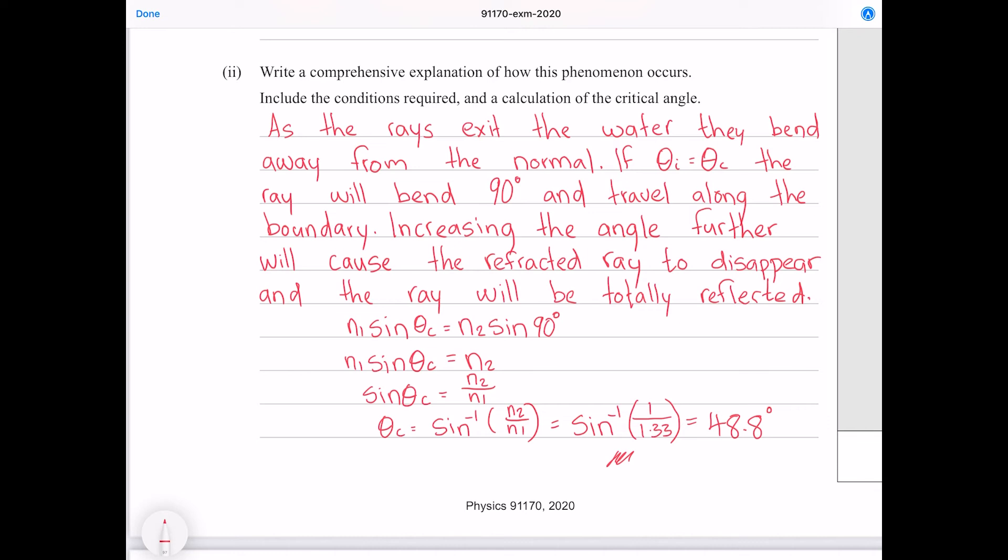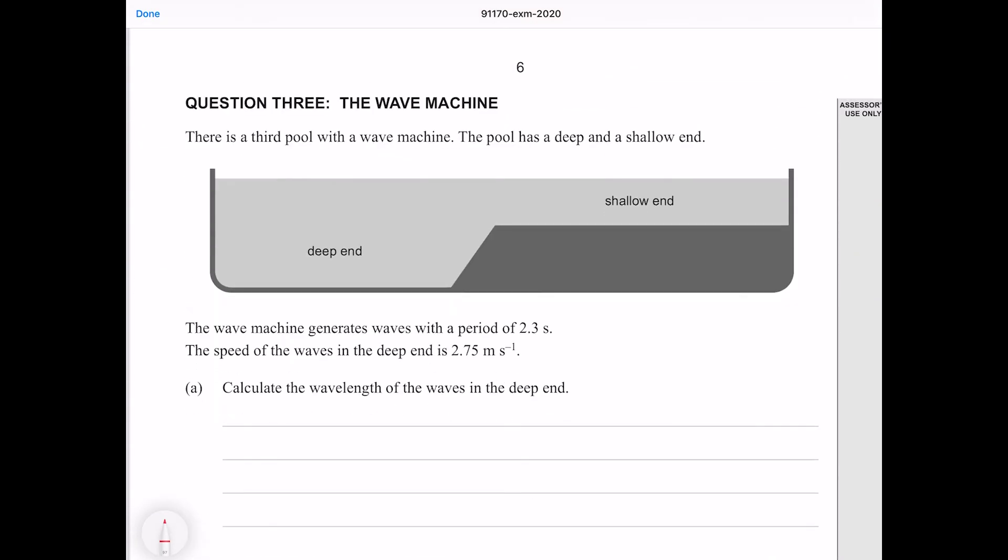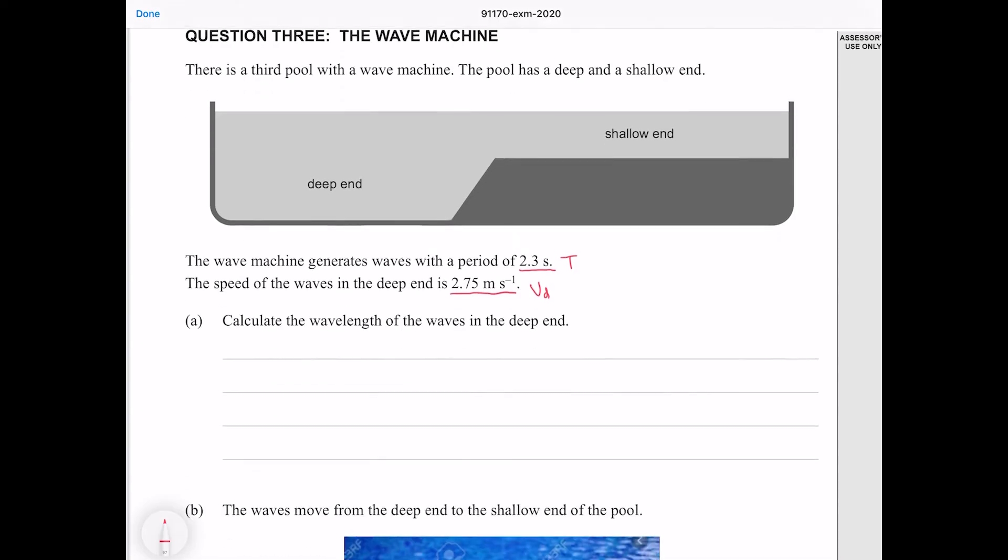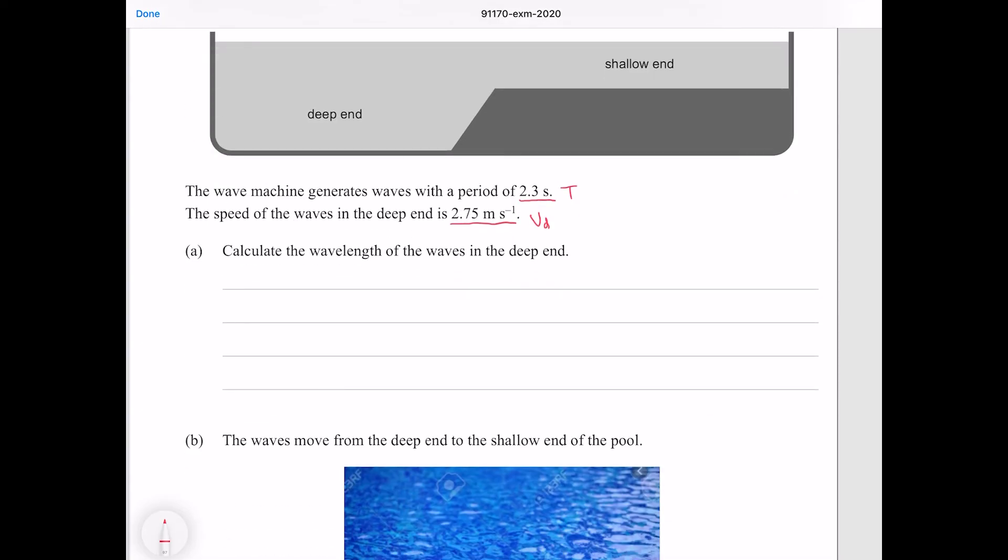Question three: There is a third pool with a wave machine. The pool has a deep and a shallow end. The wave machine generates waves with a period of 2.3 seconds. The speed of the waves in the deep end is 2.75 meters per second, which I'm just going to call v subscript d. Calculate the wavelength of the waves in the deep end.